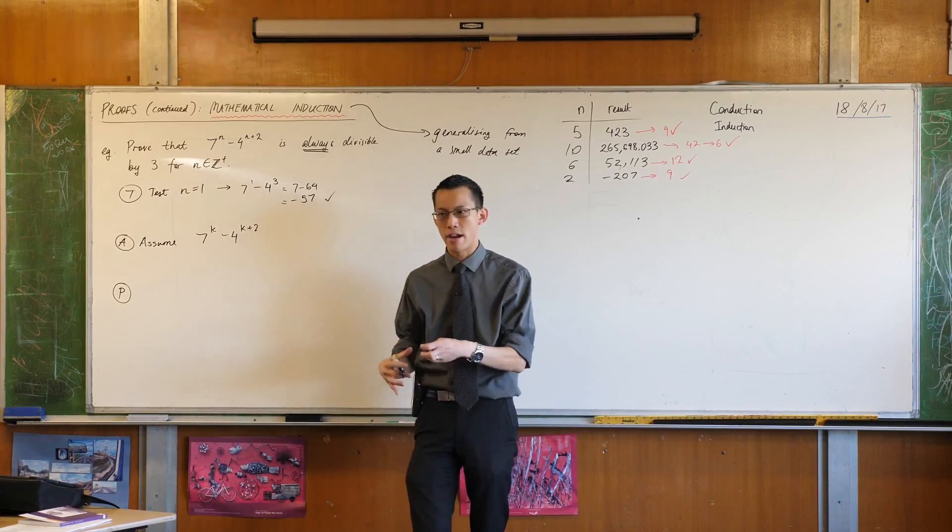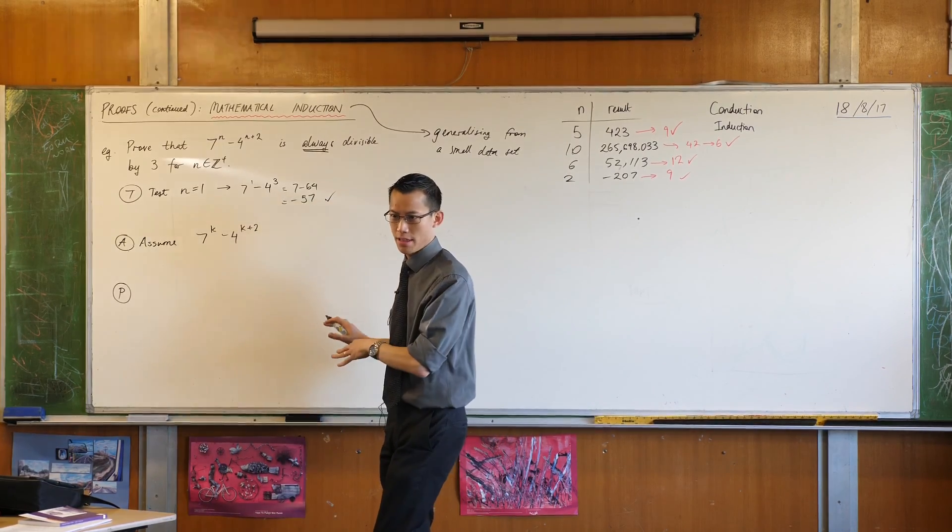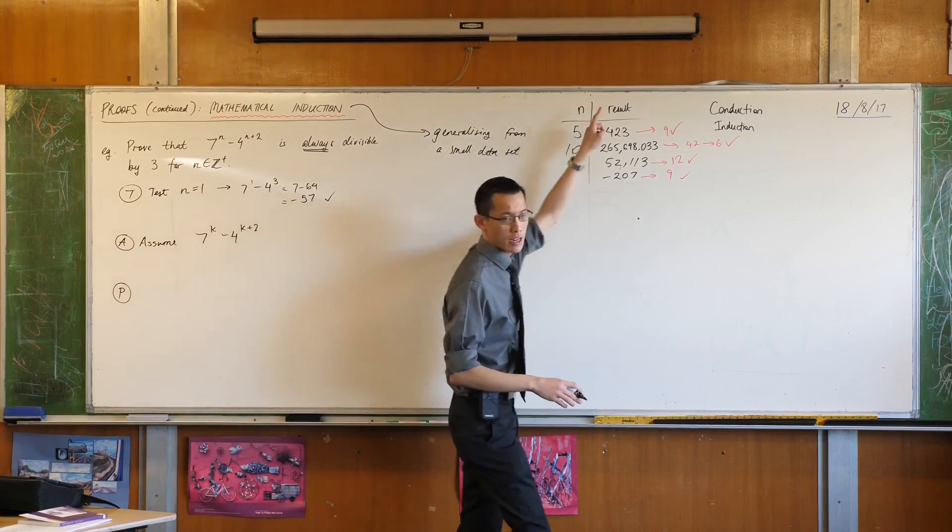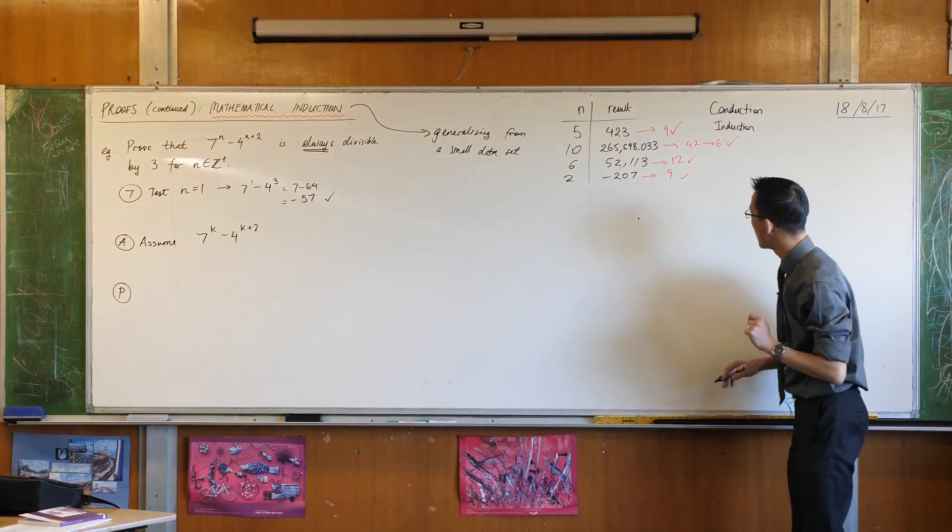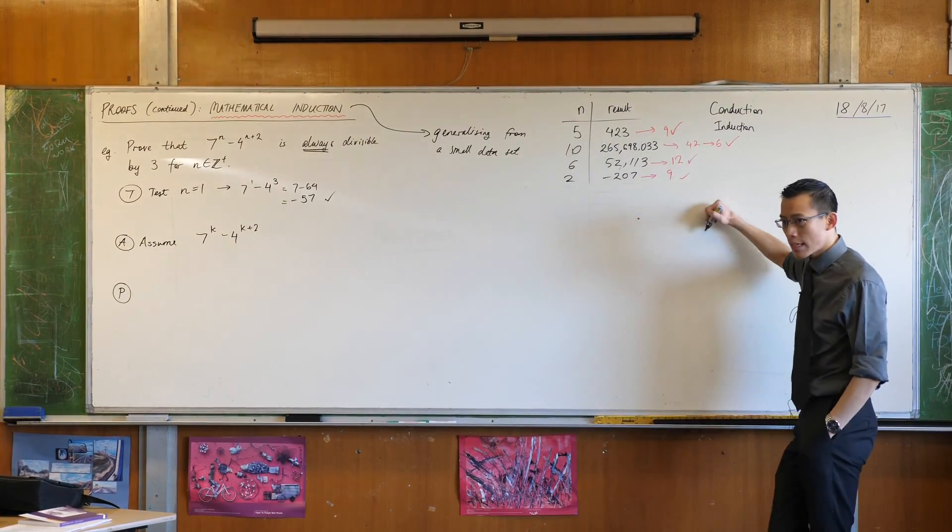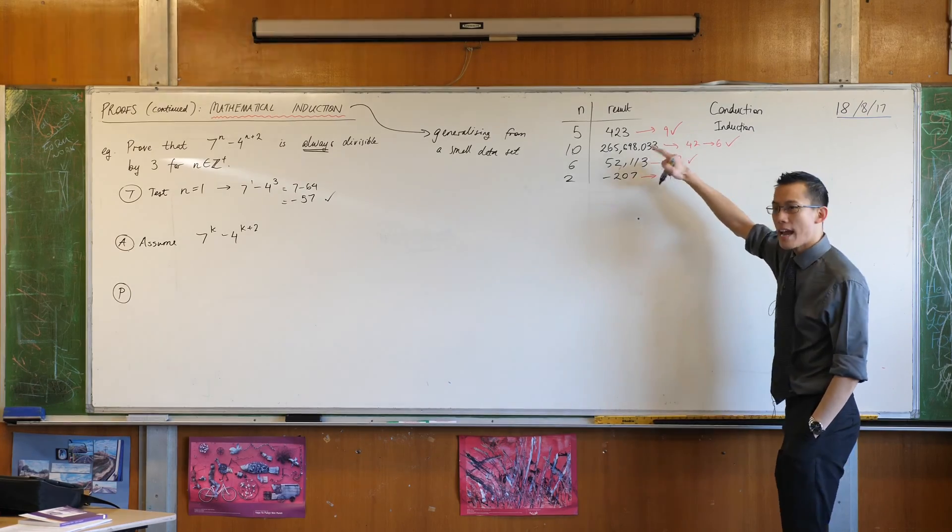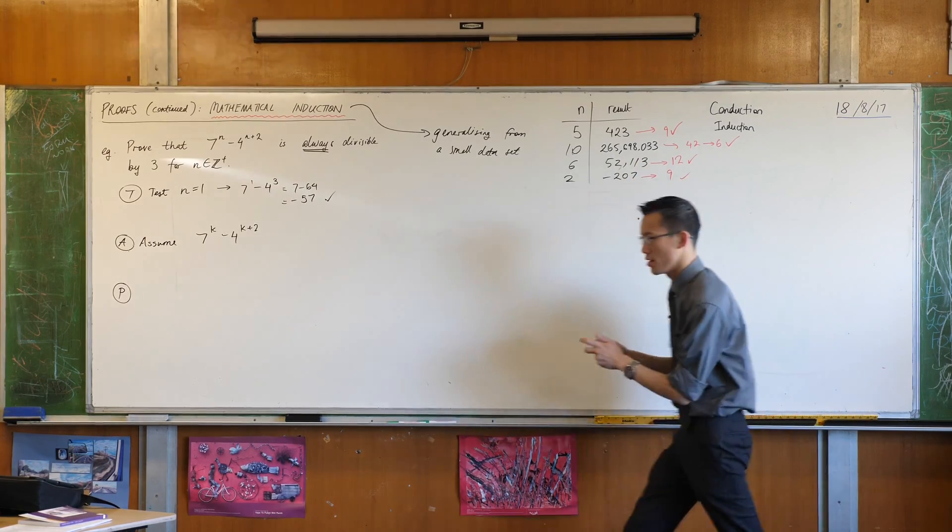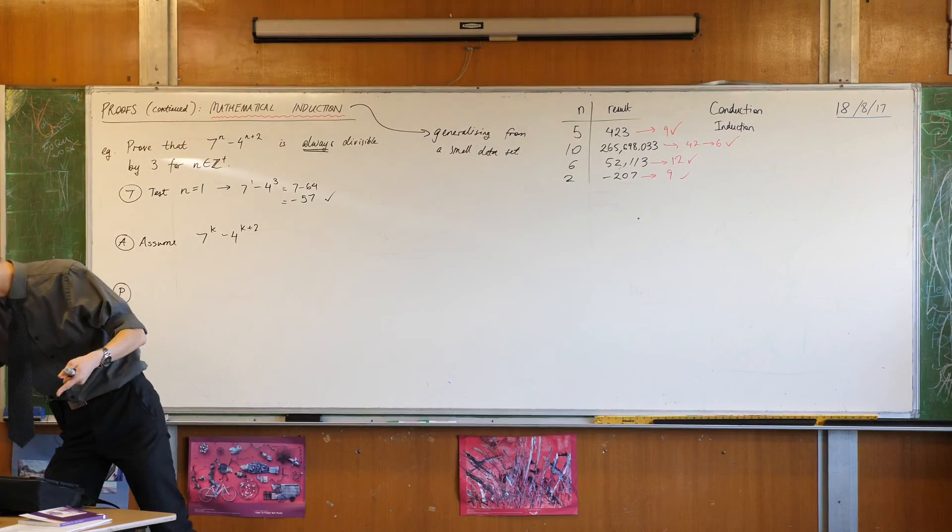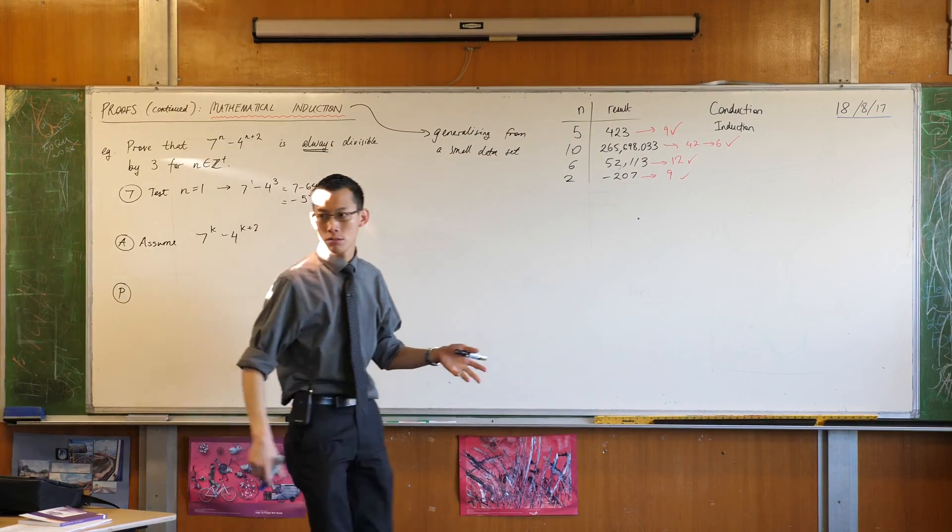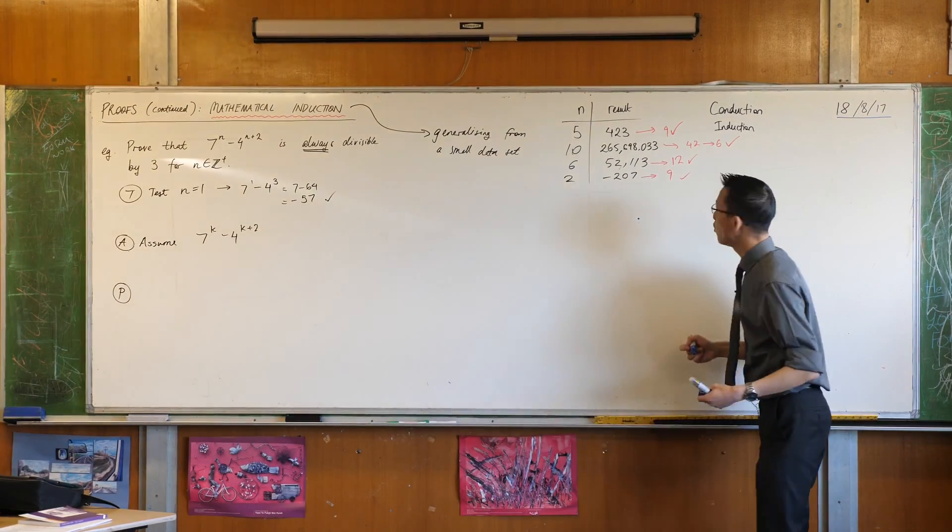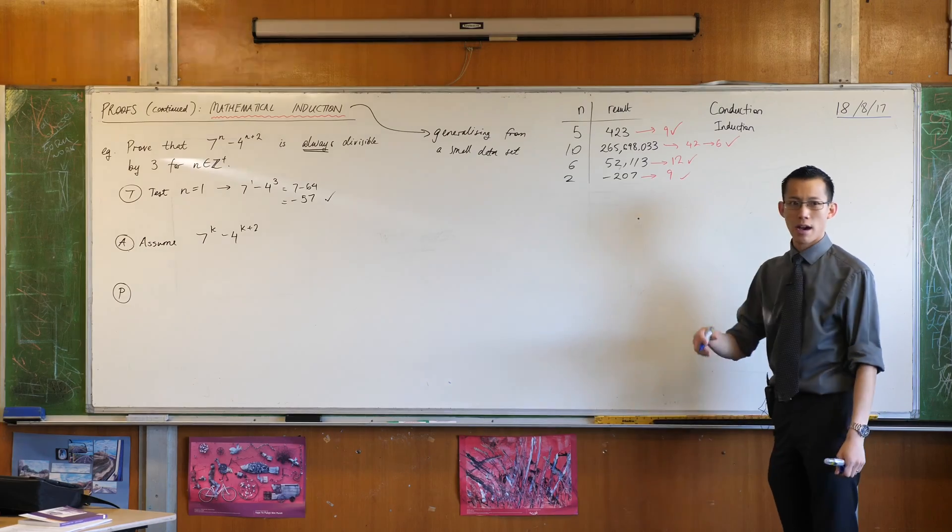Now I want to do this in an algebraic way so that I can start to manipulate this thing. So if you have a look at our numbers over here that are divisible by 3, one of the things you notice is that you can write every single one of these numbers as 3 times a whole number. Do you agree with that? So for example, what is 423 divided by 3?